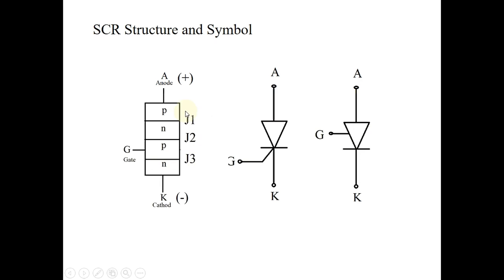And it is having three terminals: Anode, Cathode, and Gate. Anode is connected to outer P layer, Cathode is connected to outer N layer, and Gate is connected to inner P layer. This is the structure of SCR.